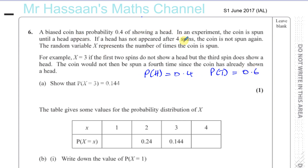In an experiment, the coin is spun until a head appears. So you keep spinning — if a head doesn't appear, you keep spinning. If a head has not appeared after four spins, the coin is not spun again. So if it doesn't appear after four spins, you don't spin the coin again.